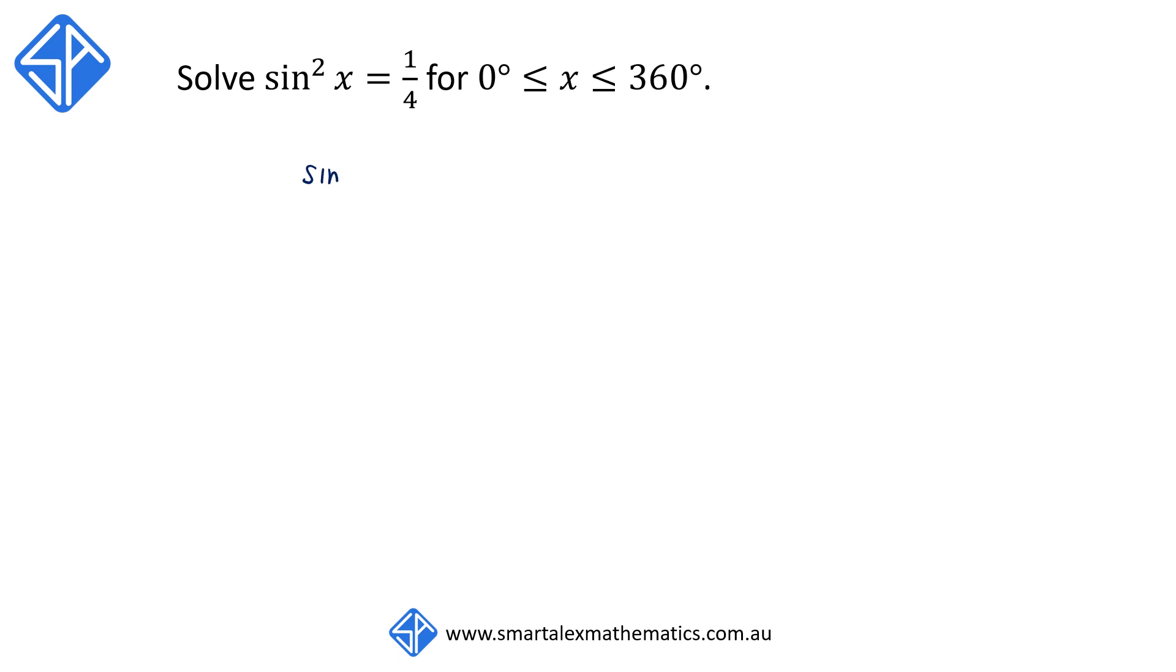Starting off by writing up the equation sine squared x equals one quarter, we're now going to take the square root of both sides to get rid of the squared. When we take the square root, we can get either the positive or the negative answers. That means we can have sine x equals positive one half, or sine x equals negative one half.